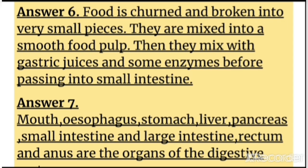They are mixed into a smooth food pulp. Then they mix with gastric juices and some enzymes before passing into small intestine. Answer number seven: Mouth, oesophagus, stomach, liver, pancreas, small intestine and large intestine, rectum and anus are the organs of the digestive system.